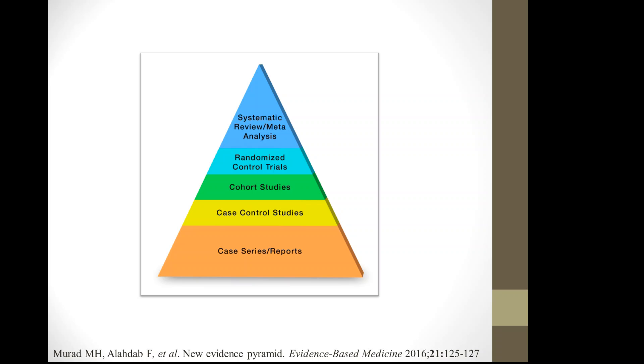Therefore, the first modification to this pyramid that we suggested is to change these straight lines into wavy lines. And that is to reflect the use of grading up and down the evidence, depending on these aspects that I mentioned, like imprecision, inconsistency, indirectness and some other factors, that can lead you to judge a study as higher quality or as low quality evidence. And that is independent of its study design.